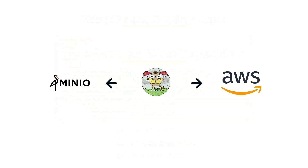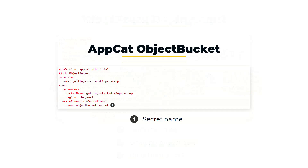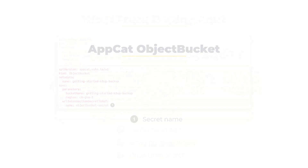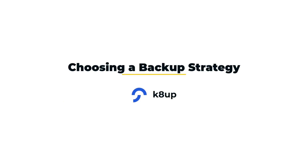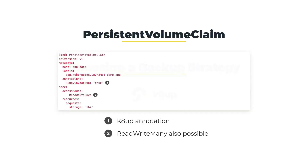For convenience, we're going to request an S3 bucket with AppCat using an ObjectBucket resource. Our WordPress blog requires a persistent volume claim to store the images uploaded by the blog authors. We want to make sure that they are backed up by KDAB as well, so we apply the kdab.io/backup=true annotation on our claim. KDAB automatically backs up all persistent volume claims either marked as read-write-once or read-write-many that contain this annotation.